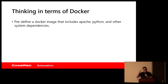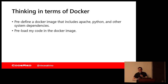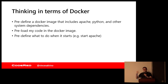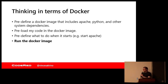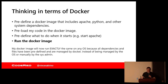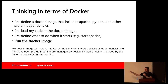Let's think about this same experience in terms of Docker. Before I install anything or build anything or set anything up, I'm just going to pre-define an image that includes what I want. Then I'm going to pre-define where my code goes and sort of pre-load my code. Then I'm going to pre-define, okay, when this whole thing starts up, what do I want it to do first? Maybe that's start Apache. Maybe that's run a Python file. Then once I have all of this stuff defined, I'll say Docker run — here's everything you need, just go and do the whole thing all at once. So my Docker image will now run exactly the same on any OS. The dependencies have been pre-defined and will be managed through Docker, instead of being managed by the OS.